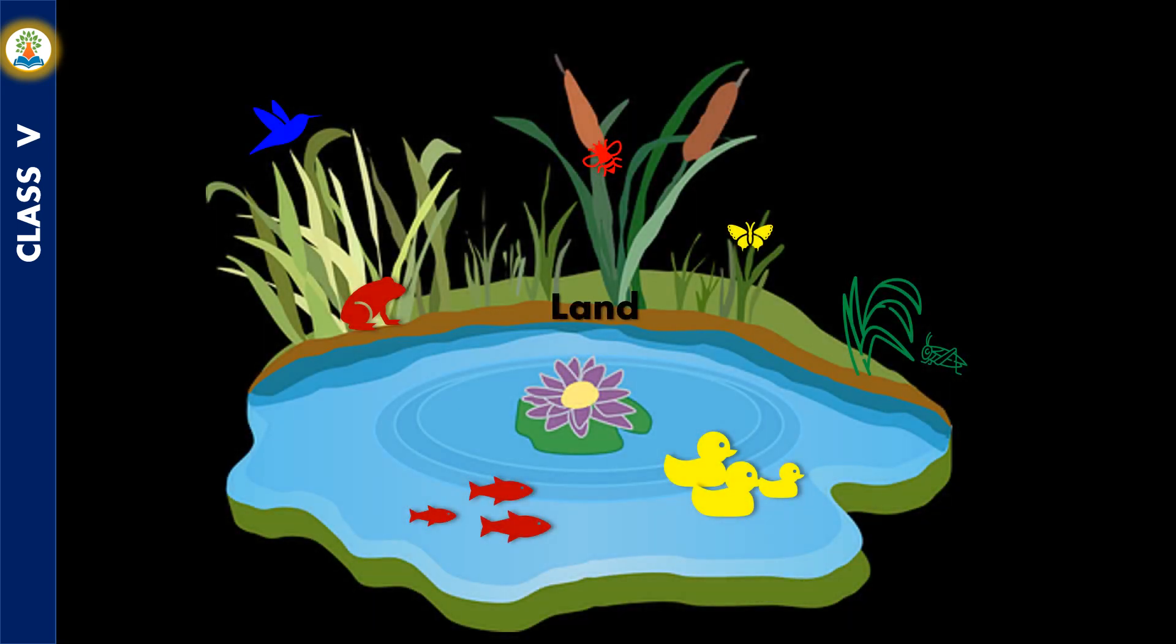Earth has life everywhere. Life exists on land, in air, and even in deep oceans. Each of these living beings exists in their habitat, which is their natural environment. This environment of each living species, which consists of living and non-living things, is known as ecosystem.